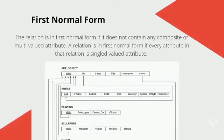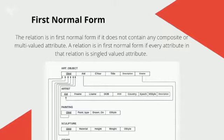First Normal Form: a relation is in 1NF if it doesn't contain any multivalued attribute. As in our diagram relation schema, we have seen that there are no multivalued attributes, so our schema is actually in First Normal Form.